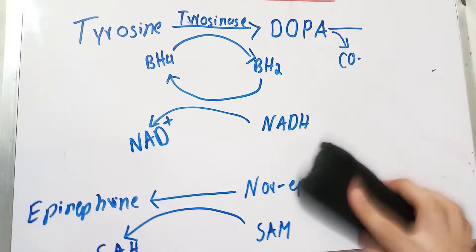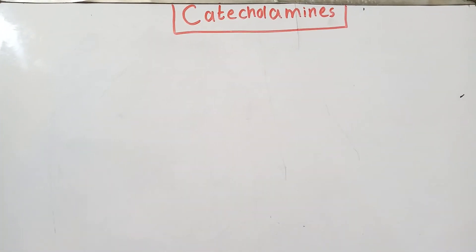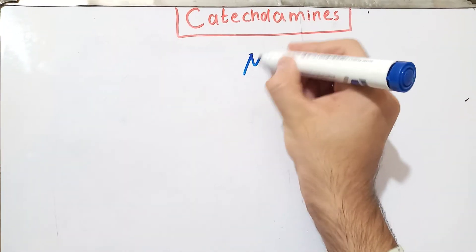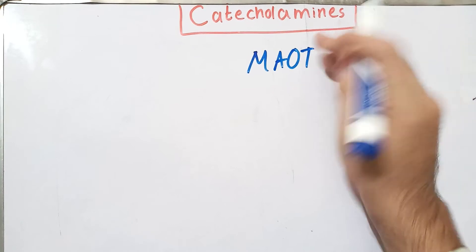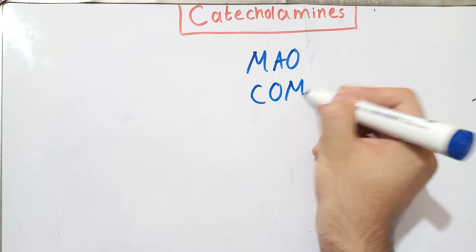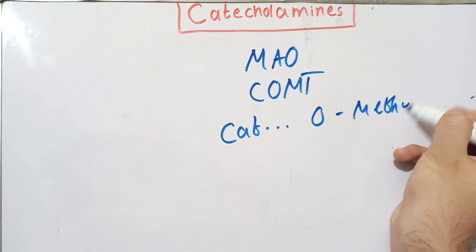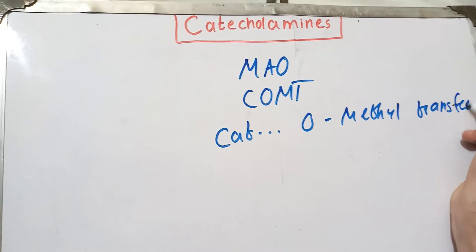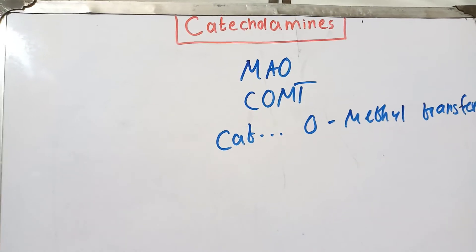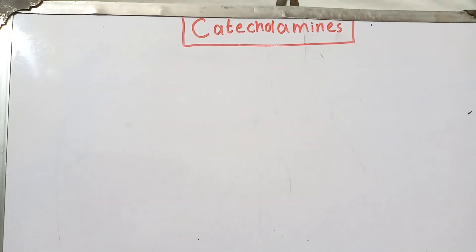Now let's talk about the degradation of catecholamines. Two enzymes are involved: first is the monoamine oxidase (MAO) enzyme, and the second is called COMT, which stands for catechol-O-methyltransferase. We will first talk about the degradation of epinephrine and norepinephrine, because their degradation is interrelated.